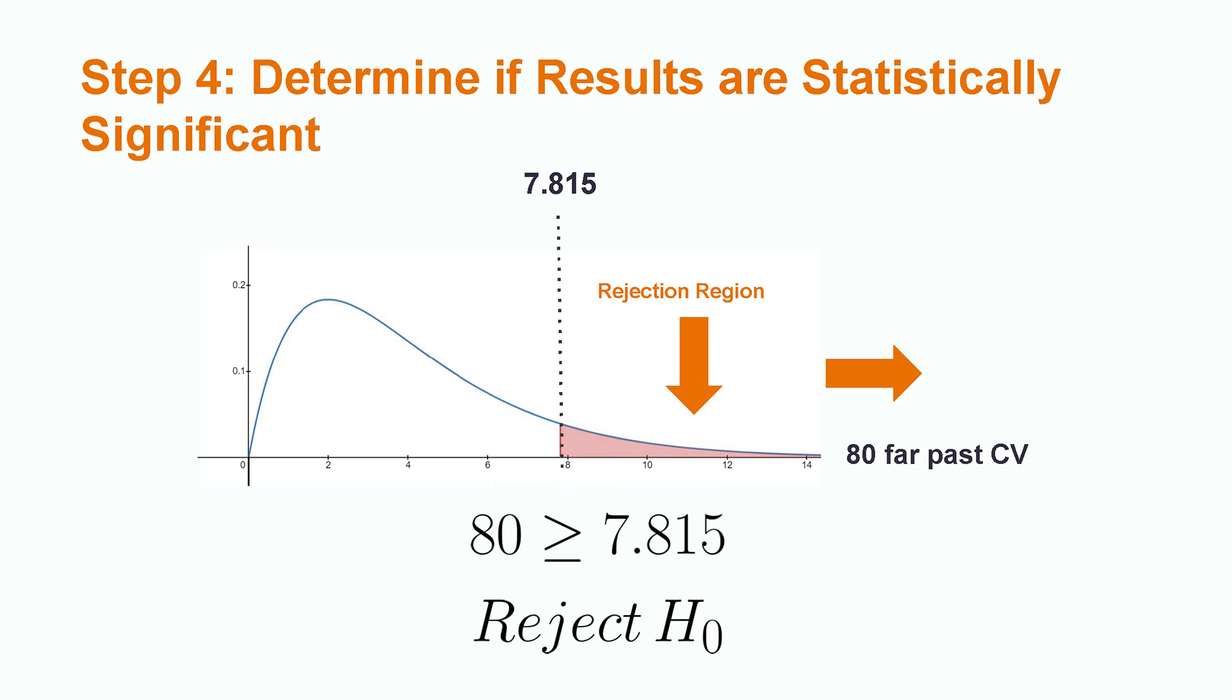If the value of our test statistic is greater than our right-tailed critical value, we reject the null hypothesis. Our test statistic of 80 is far greater than the critical value of 7.815, so we reject the null hypothesis.